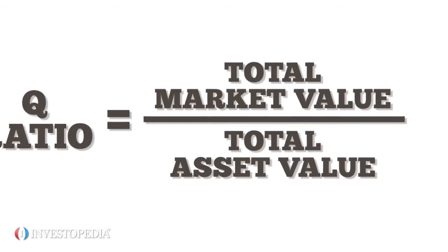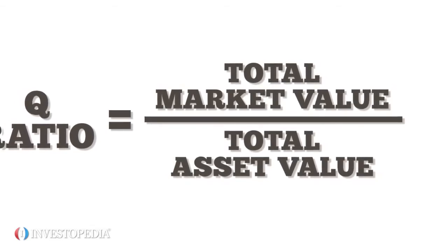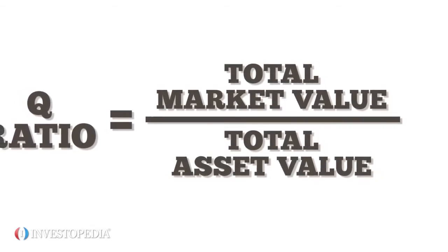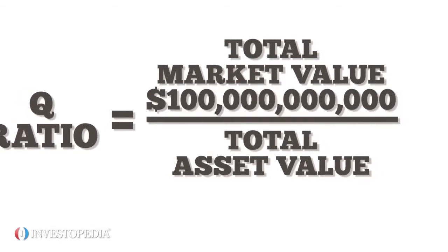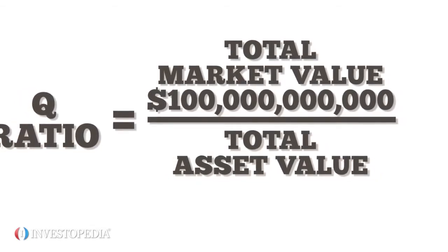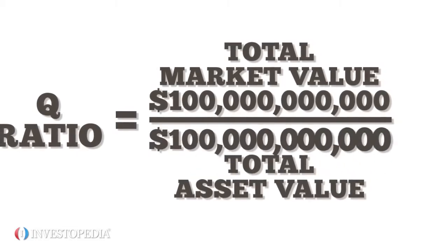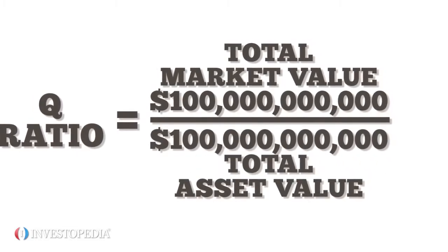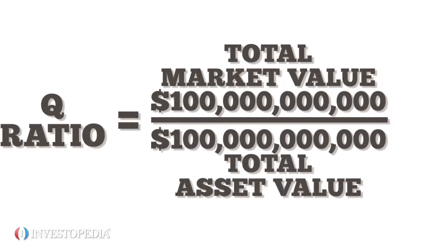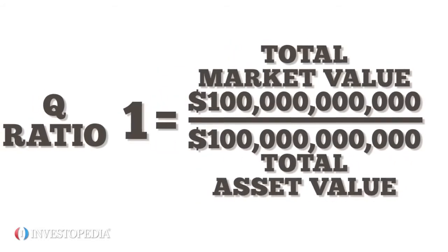For example, say the firms on a stock market have a total value of $100 billion, and the cost to replace them is $100 billion. The Q-Ratio is 1.